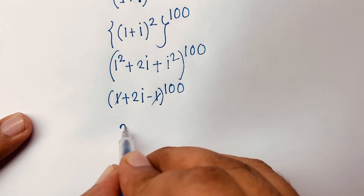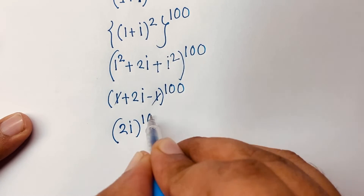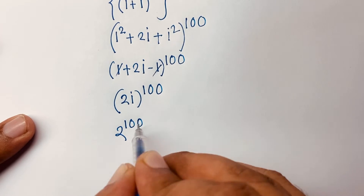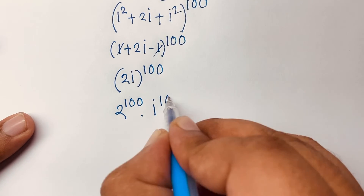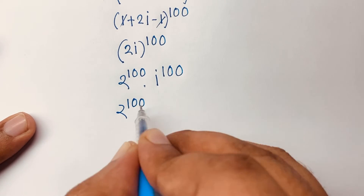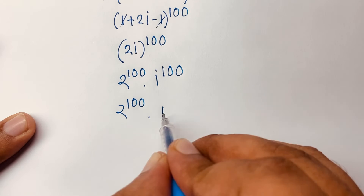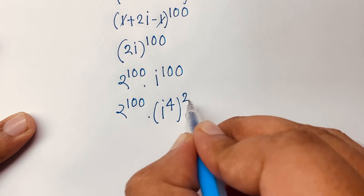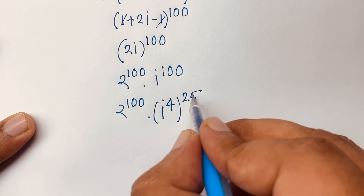The 1 and -1 cancel, leaving (2i)^100. This can be written as 2^100 times i^100.